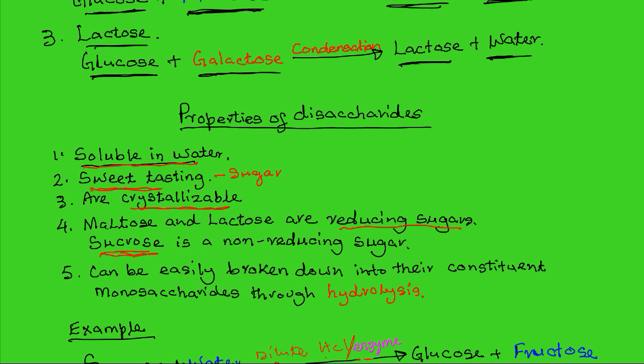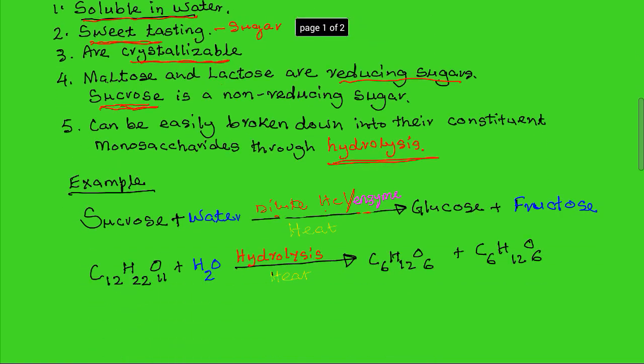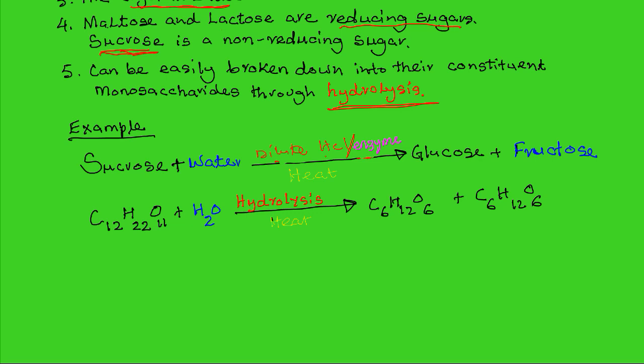The fifth property is that disaccharides can be easily broken down into their constituent monosaccharides in a process known as hydrolysis. The term hydrolysis simply means splitting using water. For example, sucrose can be hydrolyzed into its constituent glucose and fructose in two ways. Under natural conditions in the alimentary canal or in living cells, enzymes catalyze the breakdown. In the laboratory, we can hydrolyze sucrose by adding dilute hydrochloric acid and then heating.